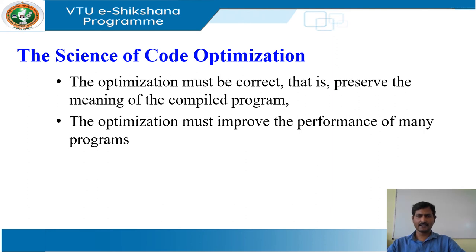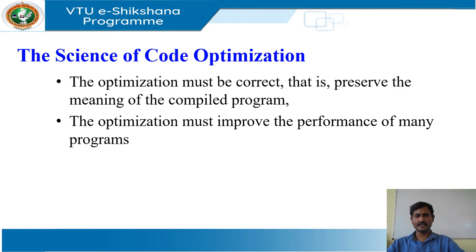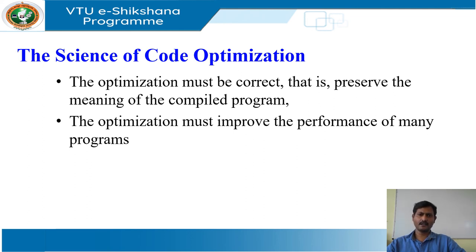The second goal is that the compiler must be effective in improving the performance of many input programs. Normally performance means the speed of program execution, especially in embedded applications. We may also wish to minimize the size of the generated code. In the case of mobile devices it is also desirable that the code minimizes power consumption. Typically the same optimizations that speed up execution time also conserve power. Besides performance, usability aspects such as error reporting and debugging are also important.